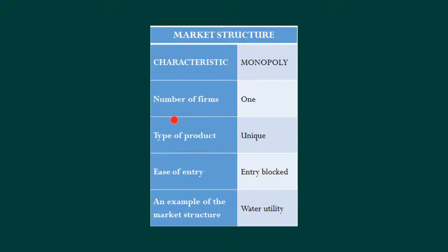With the type of product, for perfect competition it was similar, identical, or standard. For monopoly it will be unique, which is sort of by definition, because if there's only one firm making it then whatever they're making has to be unique. For ease of entry, perfect competition was very easy to enter, whereas for monopoly it's completely blocked. As an example, we are given a water utility or electric utility, where the government has said this one company shall provide this product. That would be an example of a monopoly.